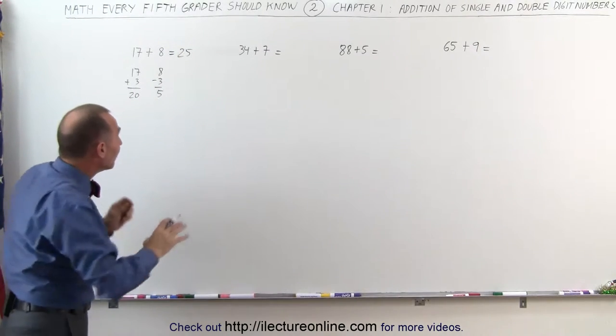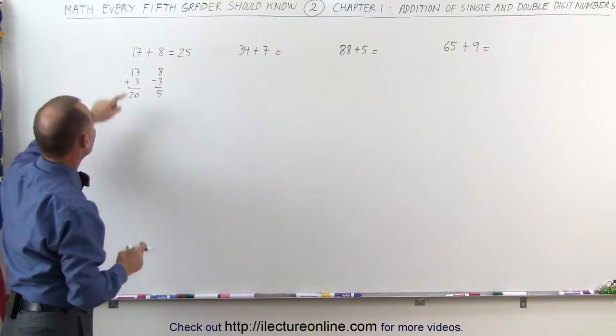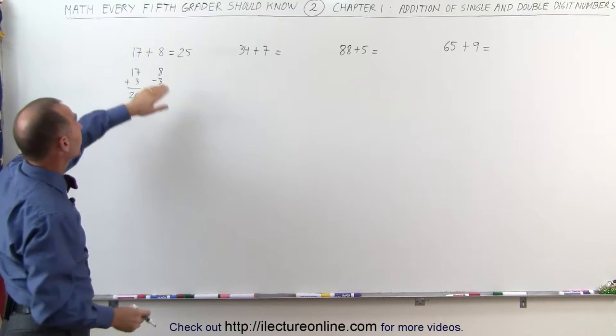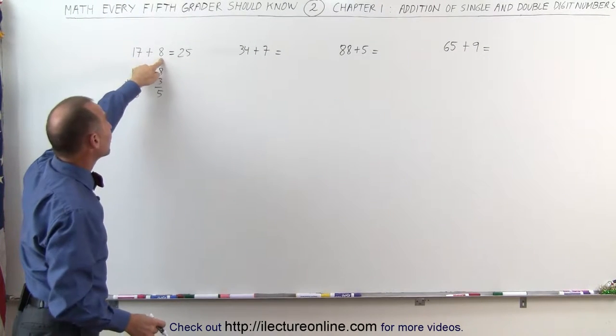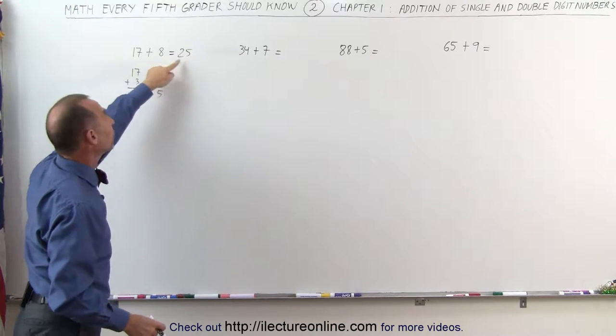That's how we look at it without even having to write it down. You could simply look at this after a little practice and say: 17 plus 3 is 20, if I take 3 away from 8 I get 5, and 20 plus 5 is 25.